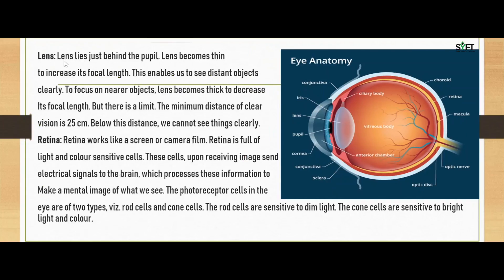Then you have the lens. In the image, this part is called the lens of the eye. The lens lies just behind the pupil. The lens becomes thin to increase its focal length, enabling us to see distant objects clearly. To focus on nearer objects, the lens becomes thick to decrease its focal length. However, there is a limit — the minimum distance of clear vision is 25 cm. Below this distance, we cannot see things clearly.